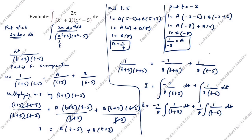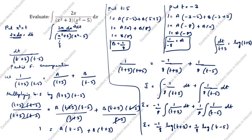The integration of dt/(t+3) is log(t+3), and similarly for the other term. So i = (-1/8)log(t+3) + (1/8)log(t-5) + C. Rearranging: i = (1/8)log(t-5) - (1/8)log(t+3) + C.